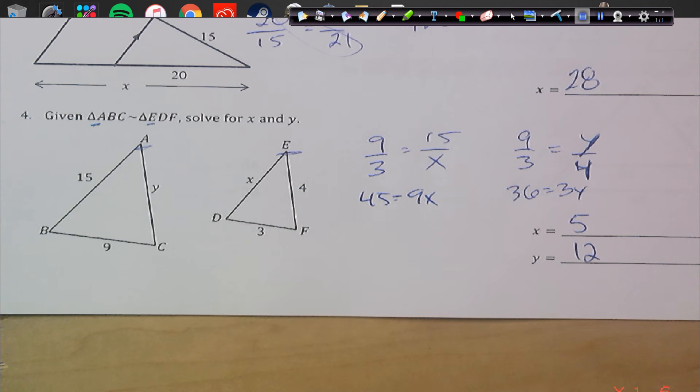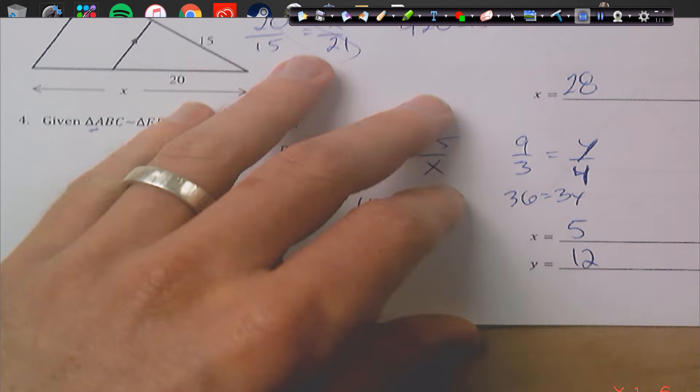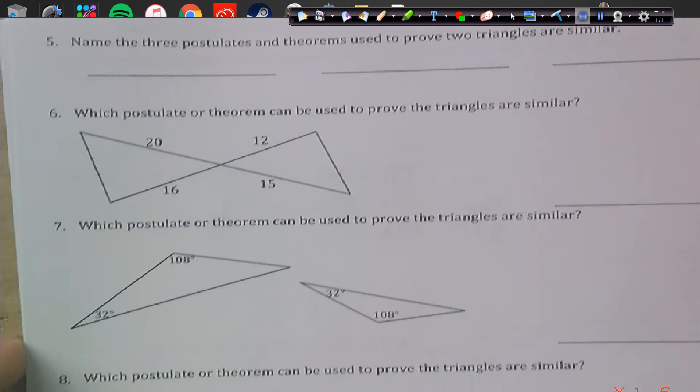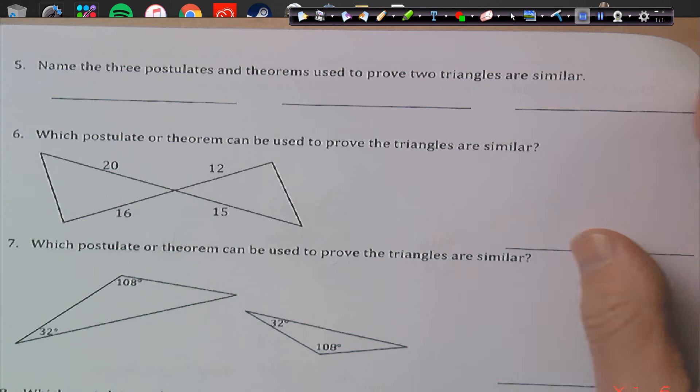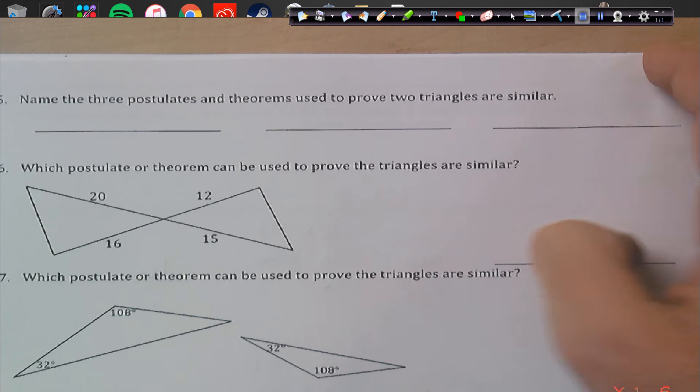Okay, so again, similarities, we use a lot of proportions to set us up these first couple questions. Okay. Alright, flipping it over to the back. Name the three postulates and theorems used to prove two triangles are similar.